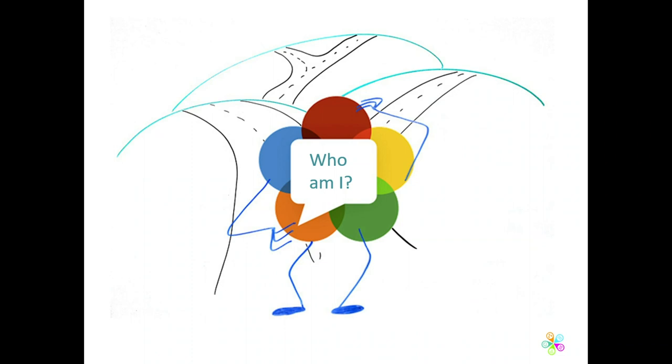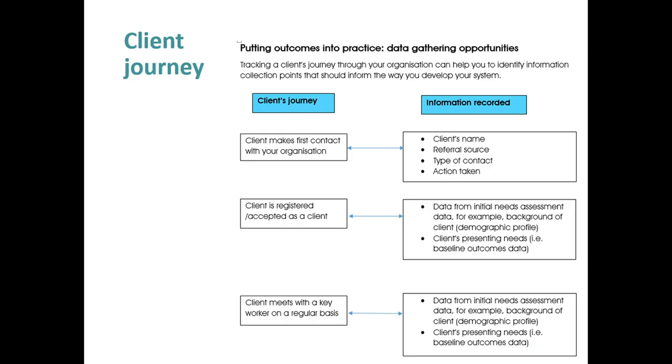A good way to think about how much data to collect is to put yourself in the position of one of your service users. What data are you collecting at different points in that journey, and how integrated is it? From the moment somebody rings a doorbell, sends an email, or makes a first request — all the way through to exiting your organization. A London housing group worked with Charities Evaluation Services to map what data would be most relevant at each point of a beneficiary's journey.